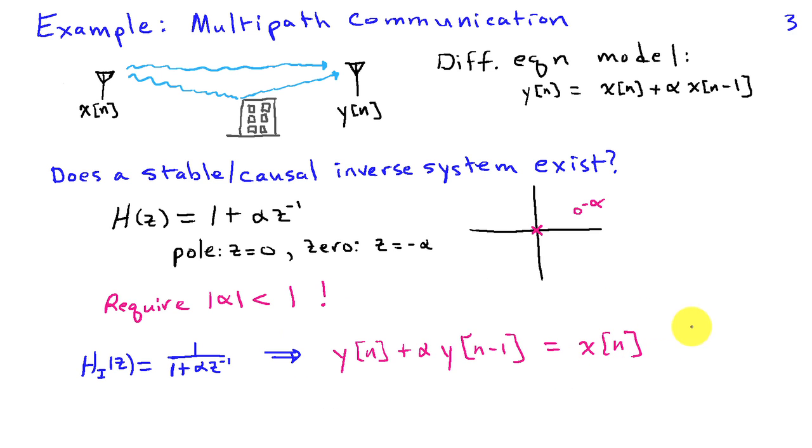Clearly, if H of z is a system described by a difference equation, then HI of z, which is just 1 over H of z, can also be described by a difference equation.